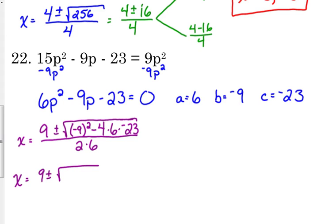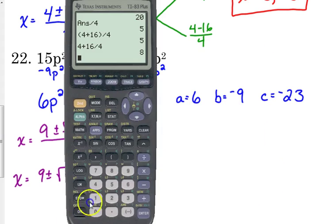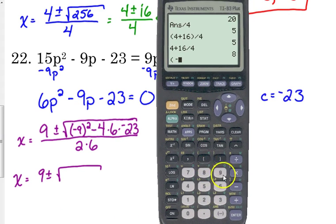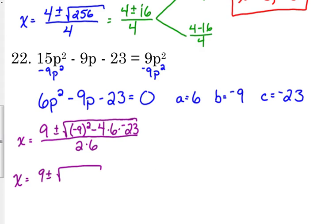And we're going to crunch those numbers under the square root, making sure that we put parentheses around the negative 9 times 4 times 6 times negative 23. That gives us 633.